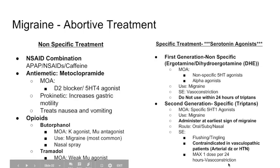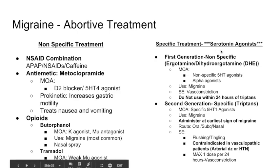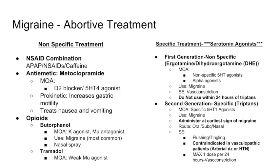Exam questions on Step will specifically ask: a patient comes in with a migraine — what is the mechanism of action of the medication used to abort it? The answer is serotonin. Another common question: a patient has a migraine and a history of coronary artery disease or MI — what is one medication to avoid? The answer would be either ergotamine or a triptan.